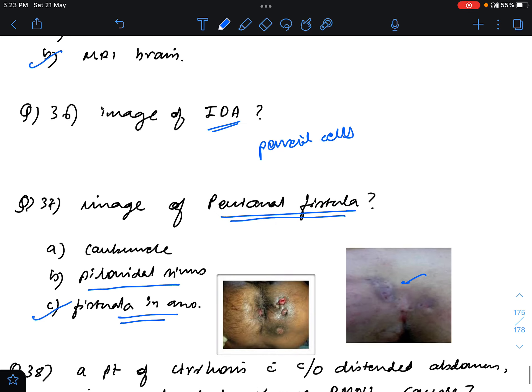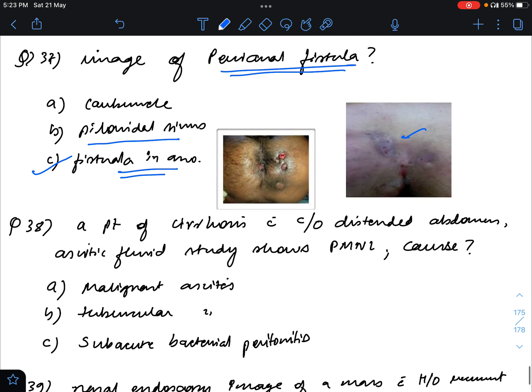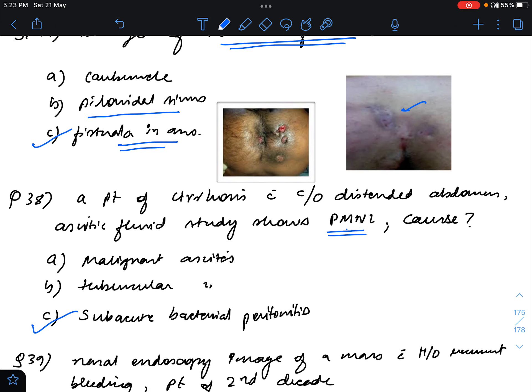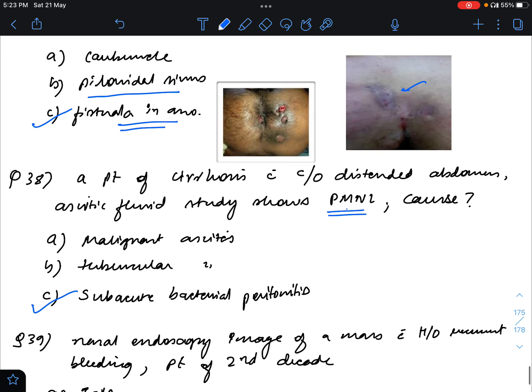Question 38: A patient of cirrhosis with complaints of distended abdomen. Ascetic fluid studies show PMN polymorphonuclear lymphocytes. What is the cause? The options are malignant ascites, tubercular ascites, subacute bacterial peritonitis. The answer will be subacute bacterial peritonitis because it is polymorphonuclear lymphocytes and in cirrhosis we know the chances of ascites due to subacute bacterial peritonitis.